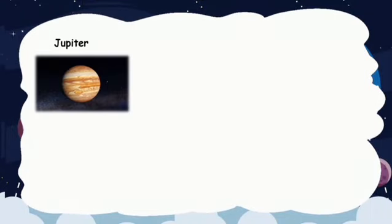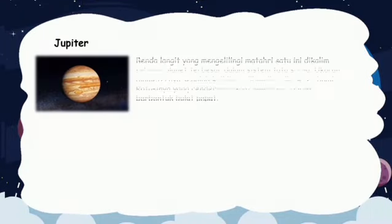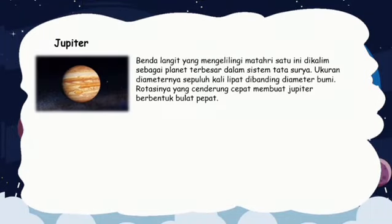5. Jupiter. Benda langit yang mengelilingi matahari satu ini diklaim sebagai planet terbesar dalam sistem tata surya. Ukuran diameternya 10 kali lipat dibanding diameter bumi. Rotasinya yang cenderung cepat membuat Jupiter berbentuk bulat pepat.